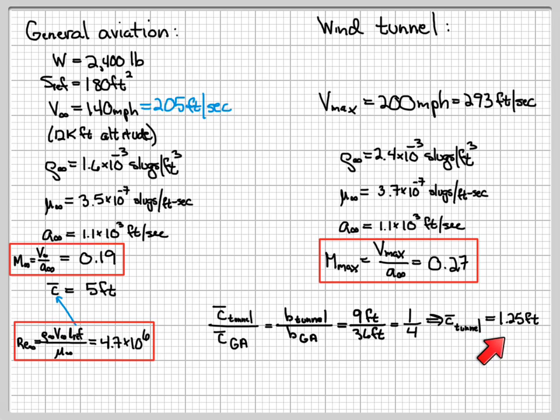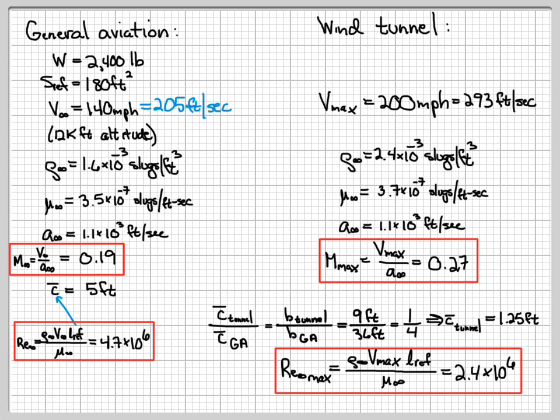Okay, now we can use that as our reference length and plug in the density and viscosity and calculate the Reynolds number in the wind tunnel and the velocity of course. So the maximum Reynolds number that can be achieved in the wind tunnel is then given by 2.4 times 10 to the 6. So if I run it at the top speed of the wind tunnel, I get 2.4 million. I need to get 4.7 million. Okay, so I'm off by about a factor of 2.